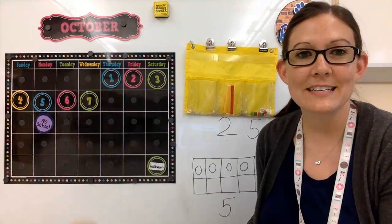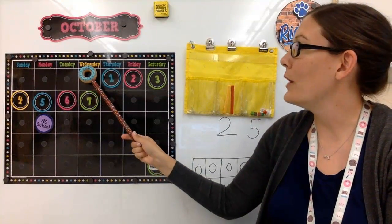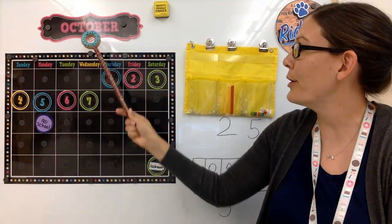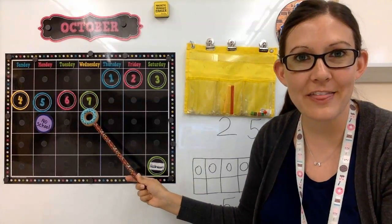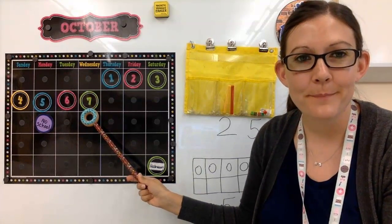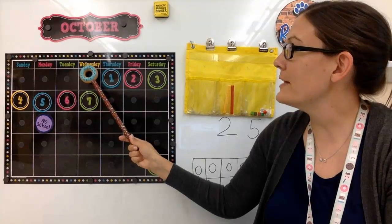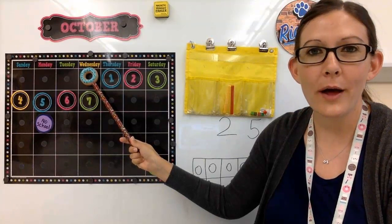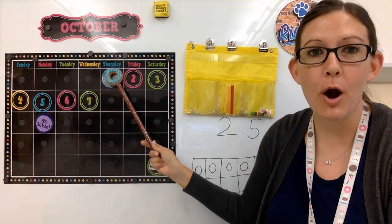That means today's date is Wednesday, October 7th. Great job! If today is Wednesday, what will tomorrow be?